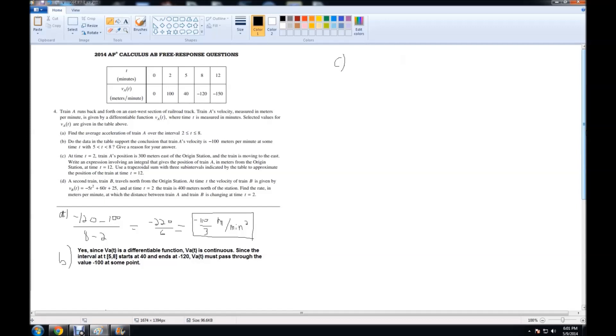Now moving on to part C. At time T equals 2, train A's position is 300 meters east of the origin station, and the train is moving to the east. Write an expression involving an integral that gives the position of train A in meters from the origin station at time T equals 12. Then it says, use a trapezoidal sum with three subintervals indicated by the table to approximate the position of the train at time T equals 12. Looking at this, I automatically think of the fundamental theorem of calculus.